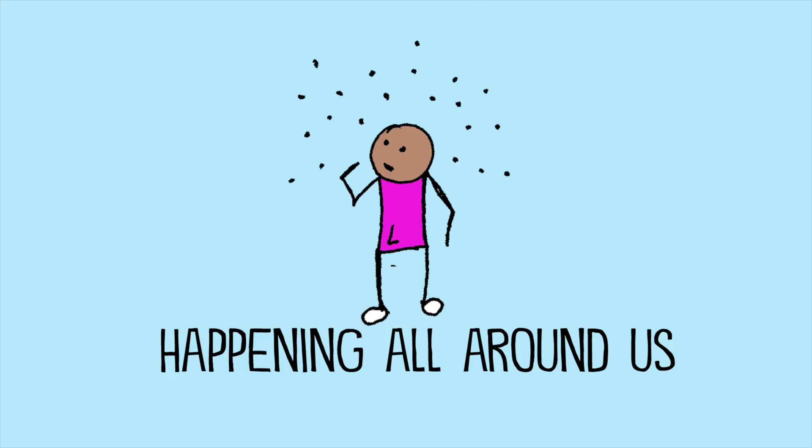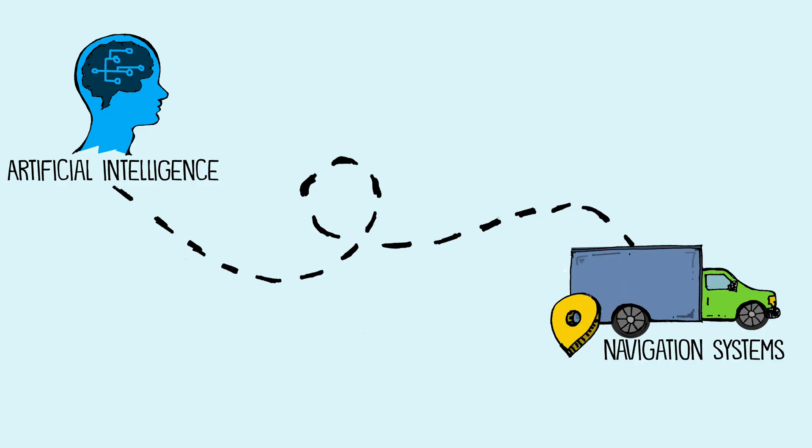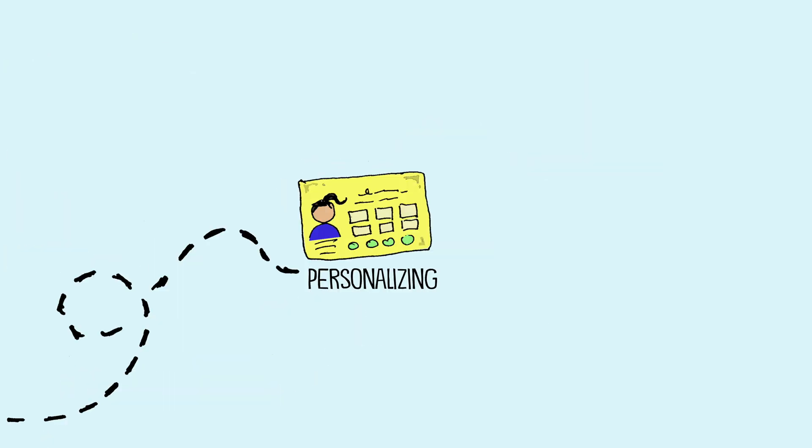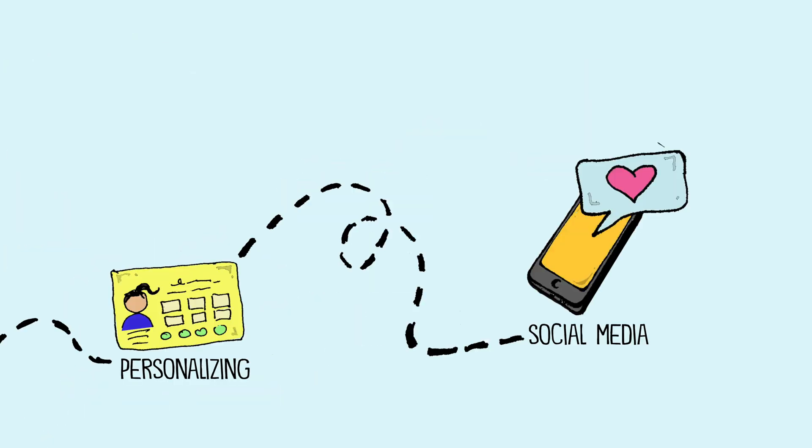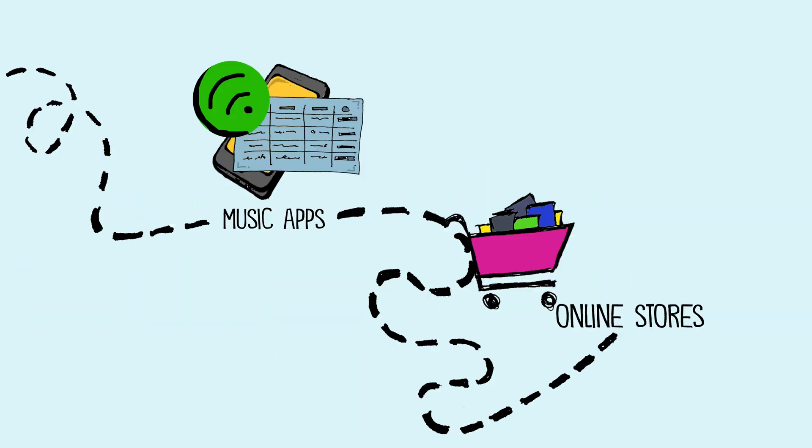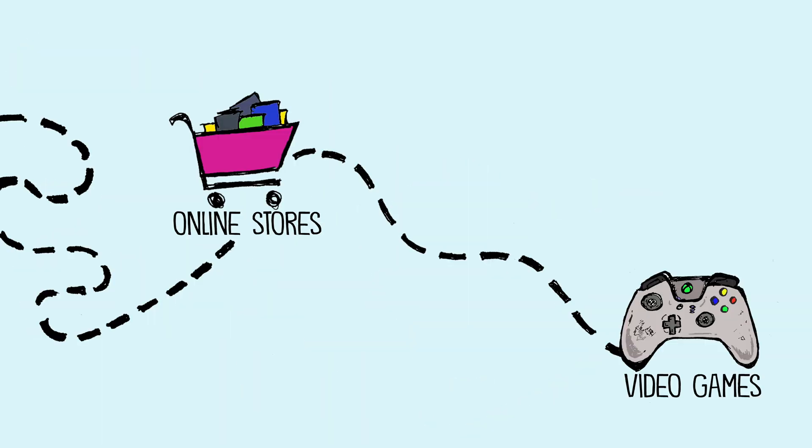Artificial intelligence is all around us. It fuels our vehicle's navigation systems and the smart devices in our homes. It's personalizing the way that we experience social media and the music apps on our smartphones, how we interact with online stores, and how we play video games.